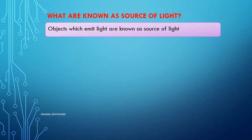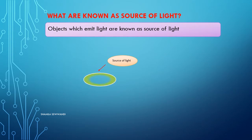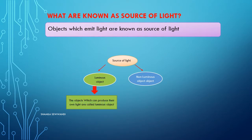What is known as a luminous object? The objects which can produce their own light are called luminous objects.